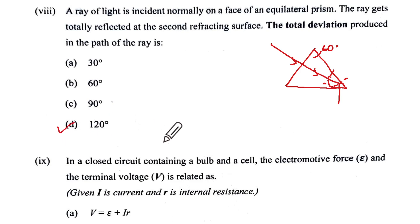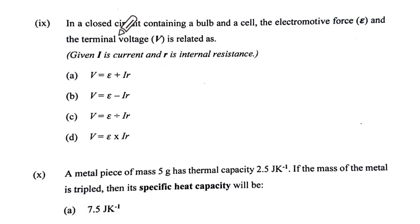In a closed circuit containing a bulb and the cell, the EMF and the terminal voltage are related as, so we know it is E minus V equals IR. So E minus IR is equal to V, and that is option B.